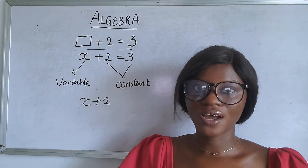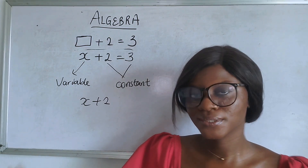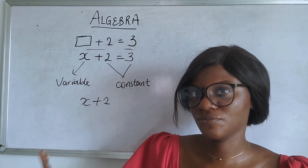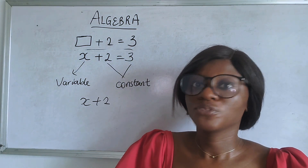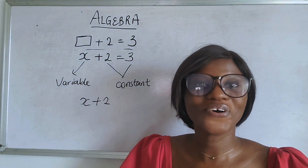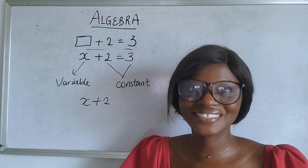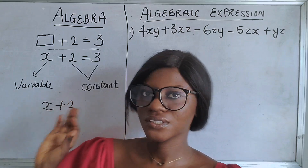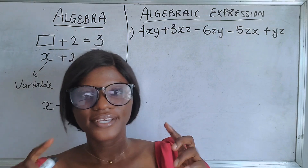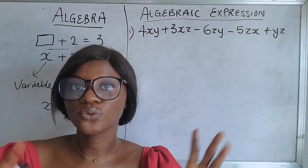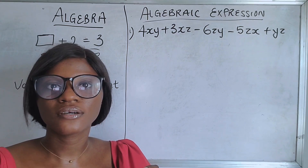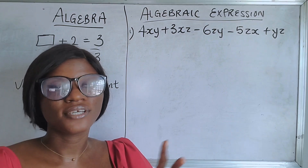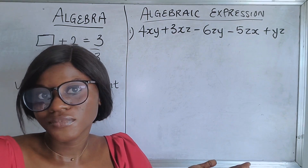Algebra is a branch of mathematics that involves using letters and numbers to solve or show a mathematical expression or equation in a layman's understanding. Whenever you hear about algebra, you always see letters in mathematics. Let's solve examples of algebraic expressions. Remember, an expression is a case where you don't have an equation sign. Think of your alphabet letters, rearrange them, and the ones that look alike - we call them family - bring them together and solve.